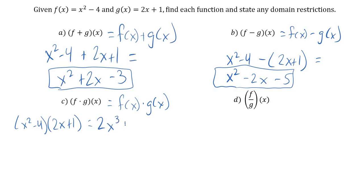So x squared times 2x would be 2x cubed, x squared times 1 would be plus x squared, negative 4 times 2x minus 8x, and negative 4 times 1 would be minus 4. Now in this case, there are no like terms. There's nothing to combine. Okay, we're done. We just multiplied through.